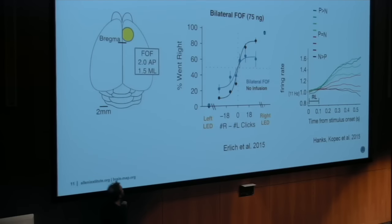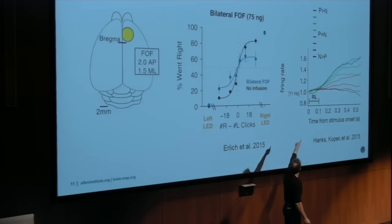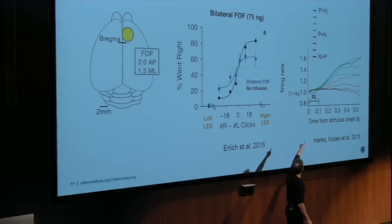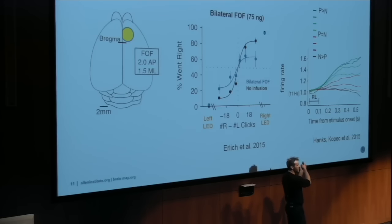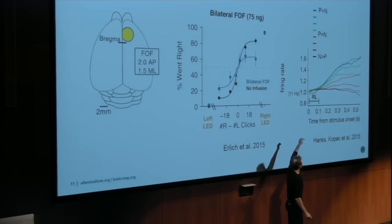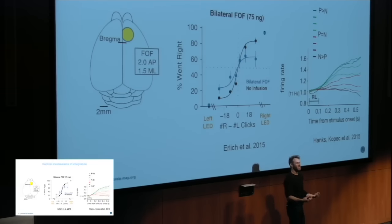If you record in FOF, you can see that neurons are tuned to the number of clicks on one side. The average activity across the population of neurons — in green, averaged across trials with a greater number of clicks to the preferred side — shows that on preferred-side trials this neuron ramps up more quickly, while on non-preferred-side trials it stays flat. The activity of these neurons represents in a graded fashion the difference in the number of clicks on either side.